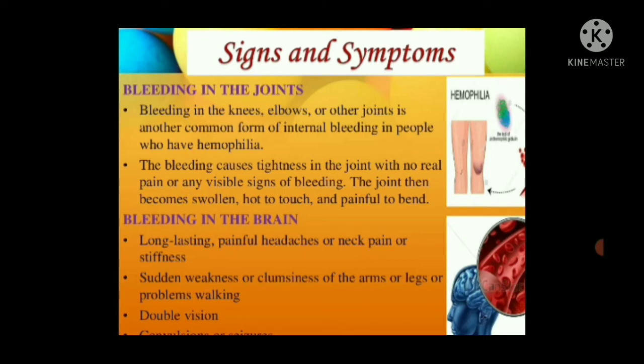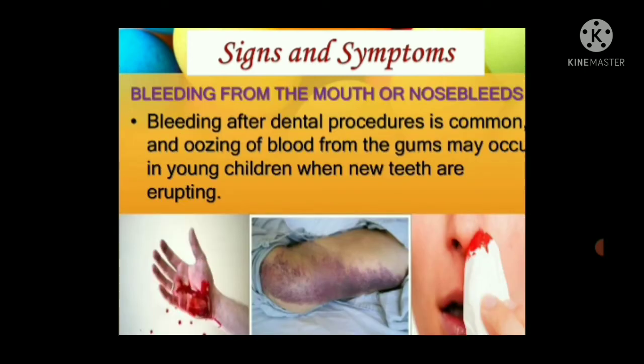Bleeding in the brain produces a long-lasting painful headache, neck pain or stiff neck, sudden weakness in arms and legs, a feeling of crumbliness, double vision, and convergent seizures can also be a problem. Bleeding from the mouth or nosebleeds and bleeding after dental procedures are common. Oozing of blood from the gums may occur in young children when new teeth are erupting.